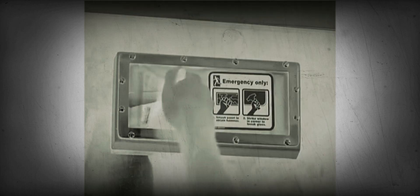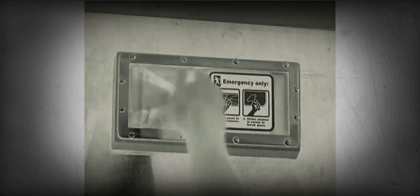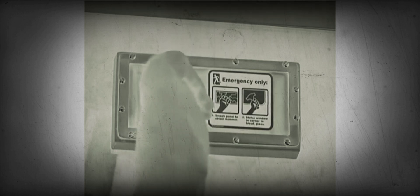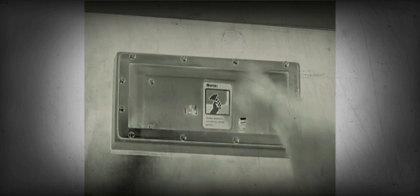If you need to break a window, locate one of the window hammers in its recessed panel. Strike the cover and pull out the green hammer. Then aim the pointed steel tip of the hammer at the glass and strike the window in one corner.